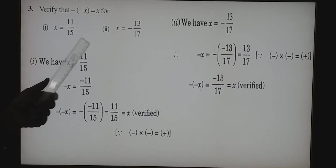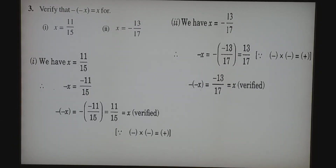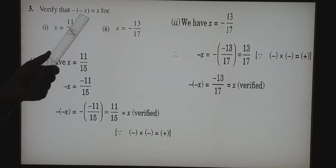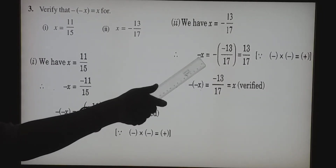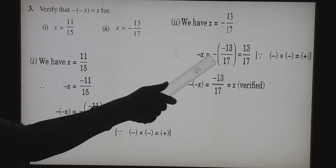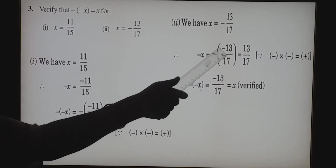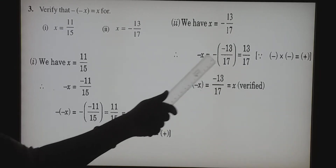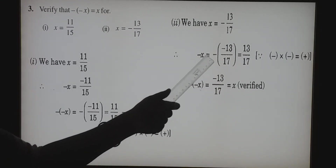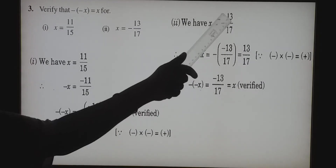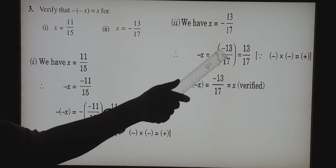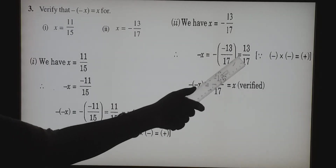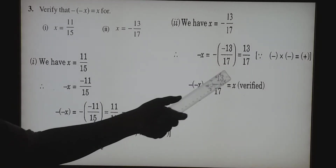Second part: X equals minus 13 by 17. We are going to find the value of minus X first. X value is minus 13 by 17, so minus X means we apply a minus sign: minus of minus 13 by 17. We place the X value in the bracket. When we simplify, minus into minus equals plus, so minus X equals 13 by 17.